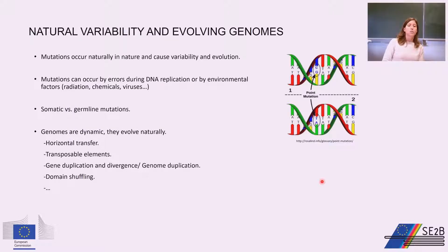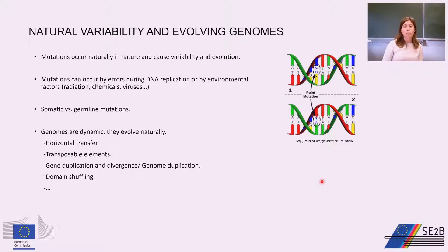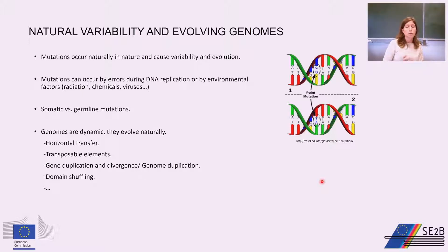Now let's talk about natural variability. Mutations occur naturally in nature and cause variability and evolution. Mutations can occur by errors during DNA replication or by environmental factors such as radiation, chemicals, and viruses. We have somatic and germline mutations. Germline mutations occur in gametes and will be transmitted to descendants, while somatic mutations occur in the rest of the cells and will not be inherited.